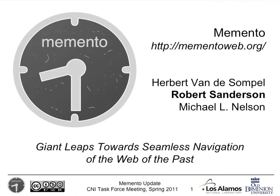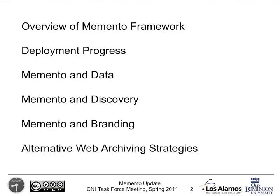How does the framework work for the past web? I'd first like to give a brief overview of the framework and how it works for allowing access to the past web. Then we'll go to how deployment is coming along, how it's been used for data, discovery of mementos, branding of archives, and finally some alternate web archiving strategies that we've been researching.